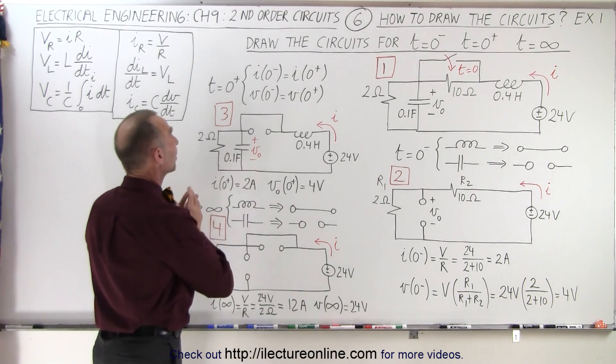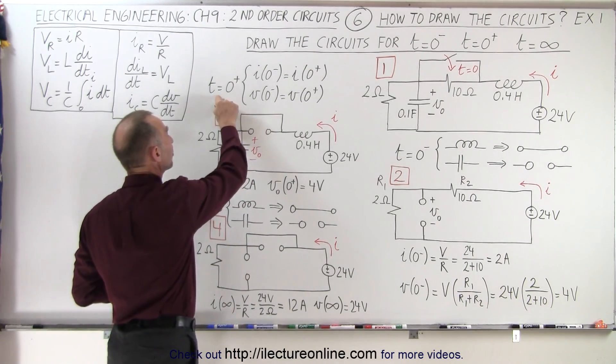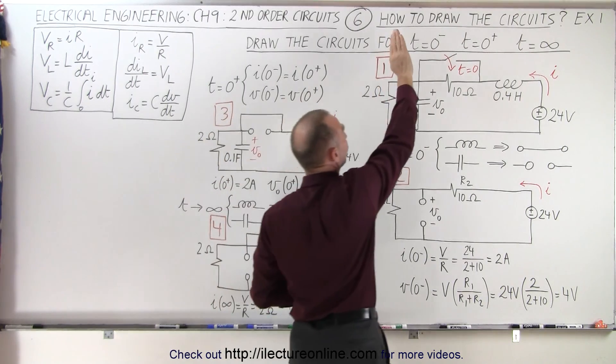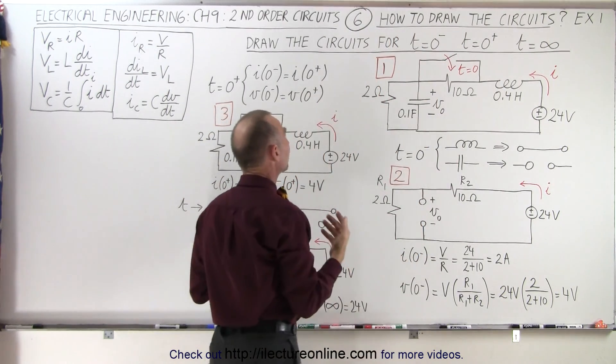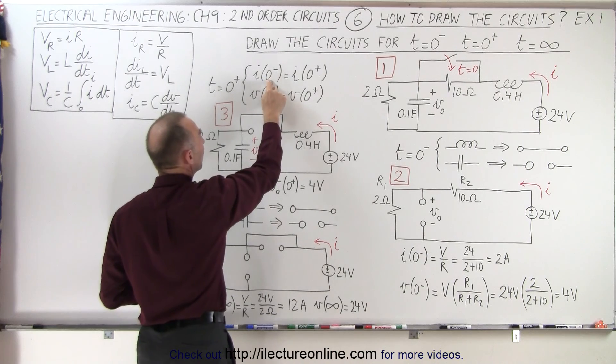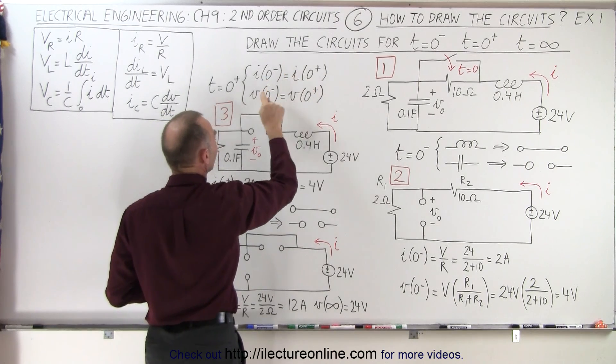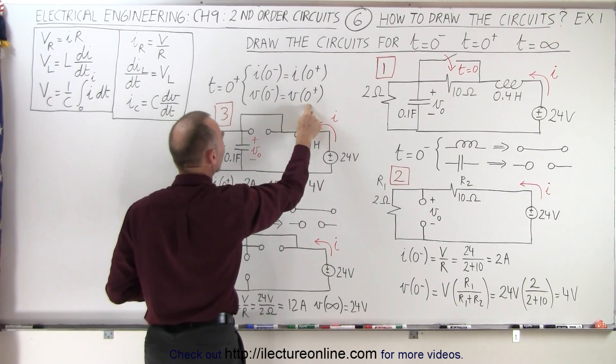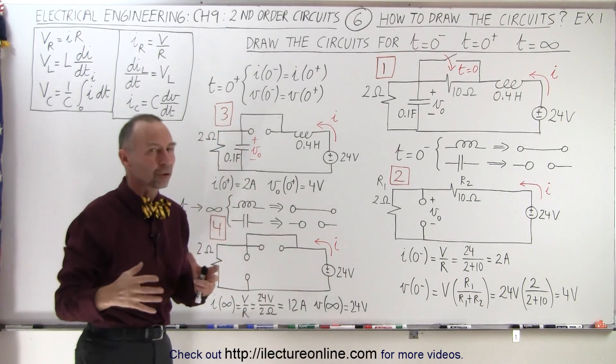The next drawing that we draw is right after the event happens, meaning right after the switch closes, which means at that point we know that the current right before must equal to the current right after. The voltage right before must equal to the voltage right after. But what does the circuit look like now?